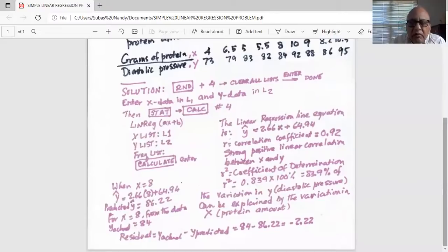Now we have been given a particular value of X and asked to predict the value of Y. Predict means forecast using the regression line equation. So we plug in the value of X equal to 8 in the equation.